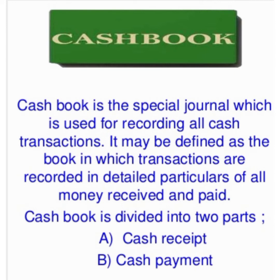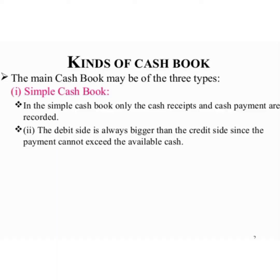The important types of cash book are: single column or simple column cash book, double column or two column cash book, triple column cash book, and petty cash book.